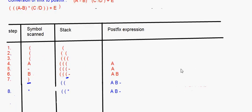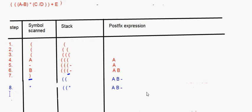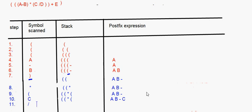Now we come to the 9th step. After the multiplication sign, you have an opening bracket, so it goes into the stack. After that opening bracket, you have C. The symbol scanned is C, which is an operand, so it goes into the postfix. Then we have a division sign — the division sign is an operator, so it goes into the stack.